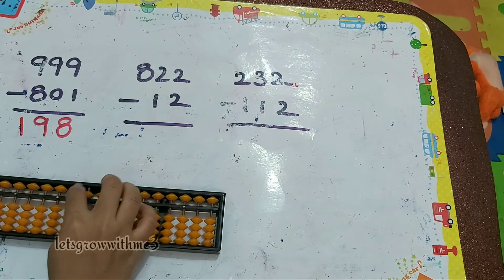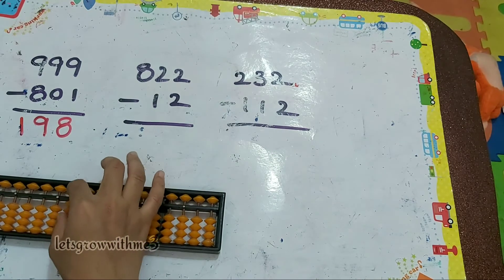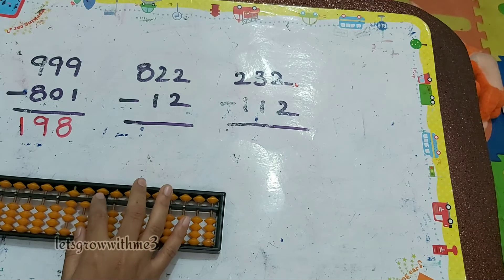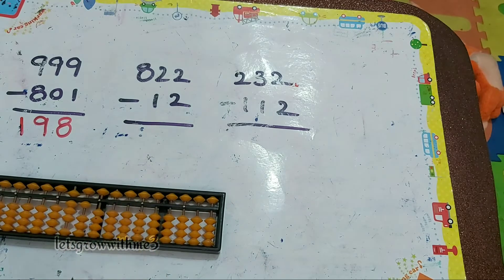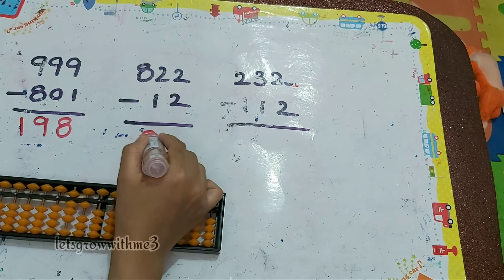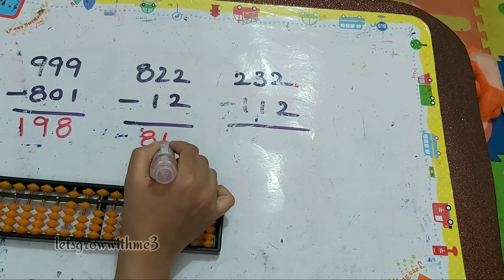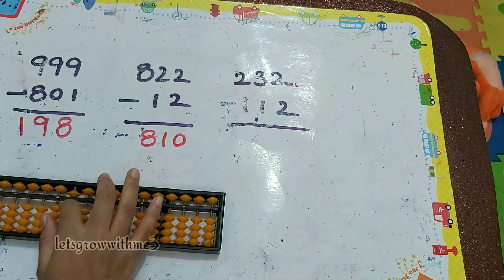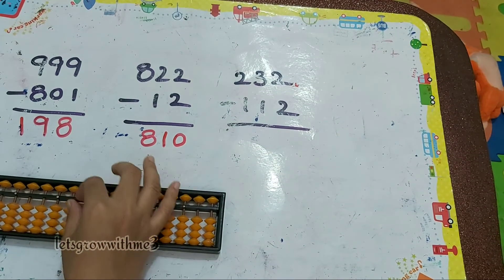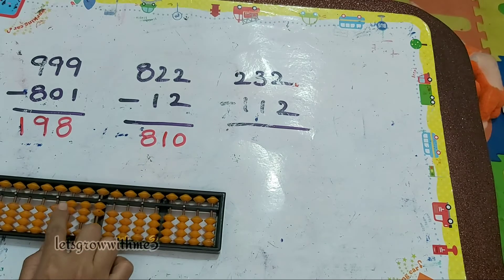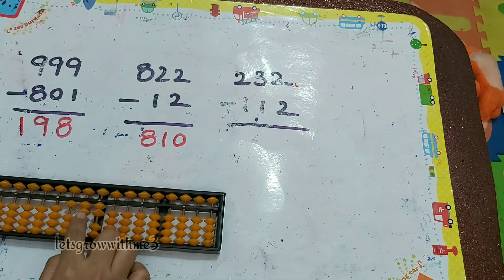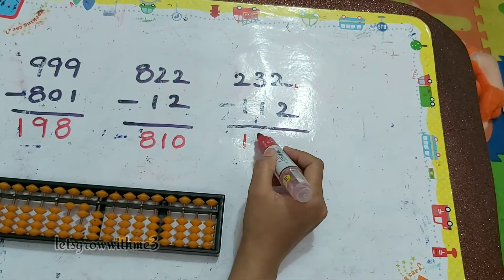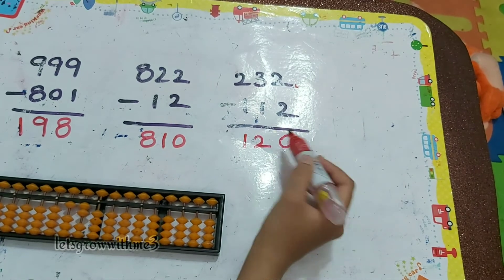Next one: 822 minus 12, so the answer is 810. Next one: 232 minus 112, so the answer is 120.